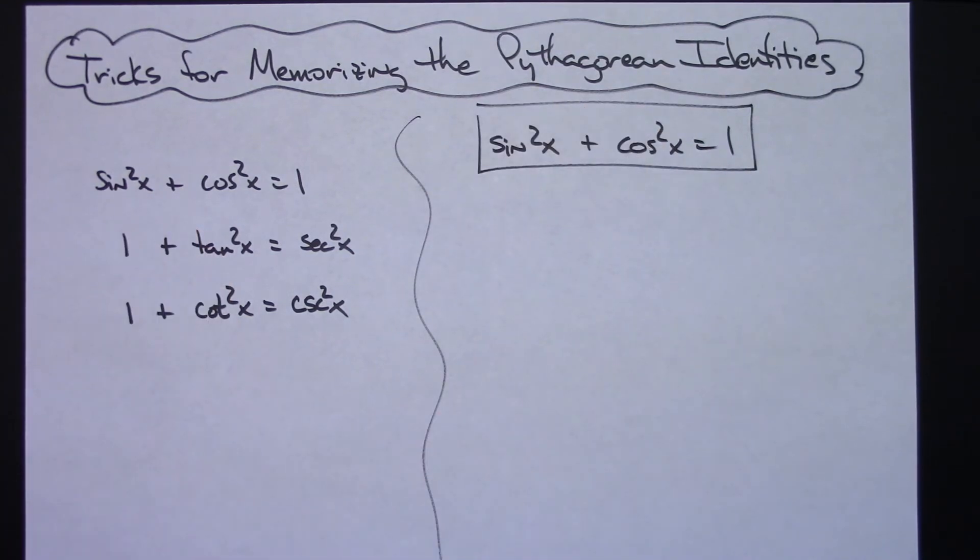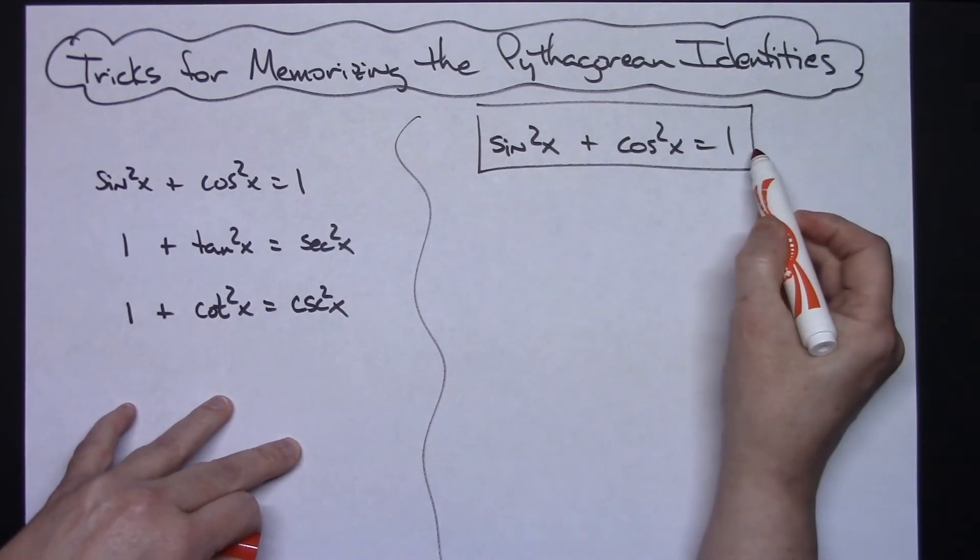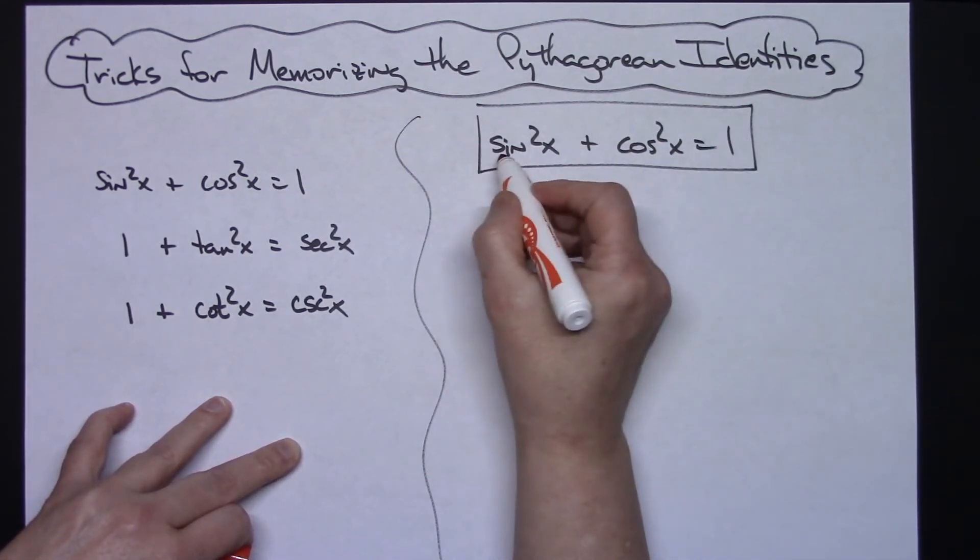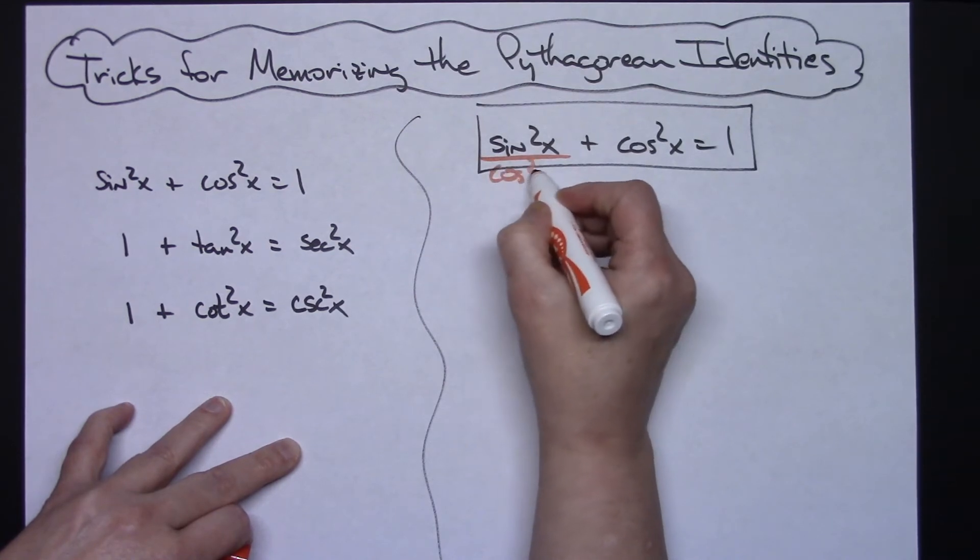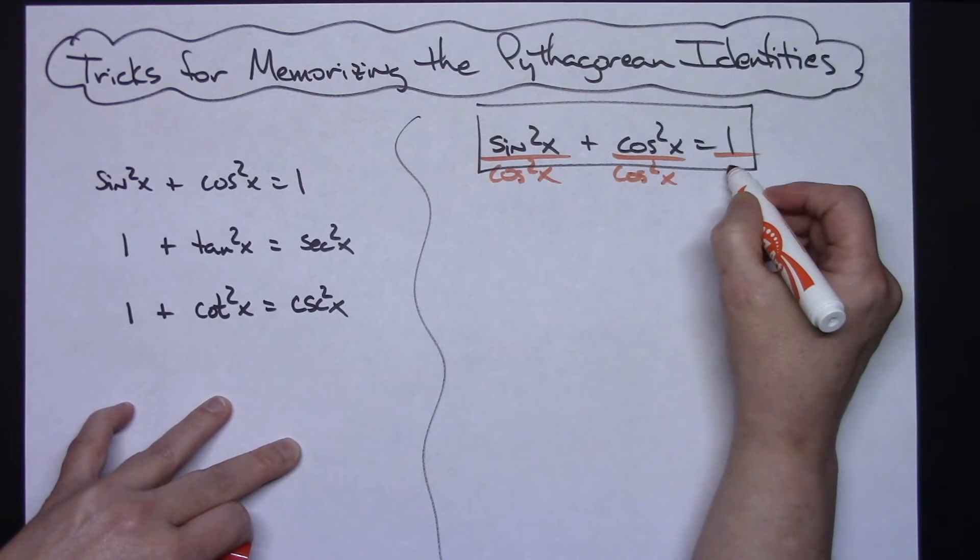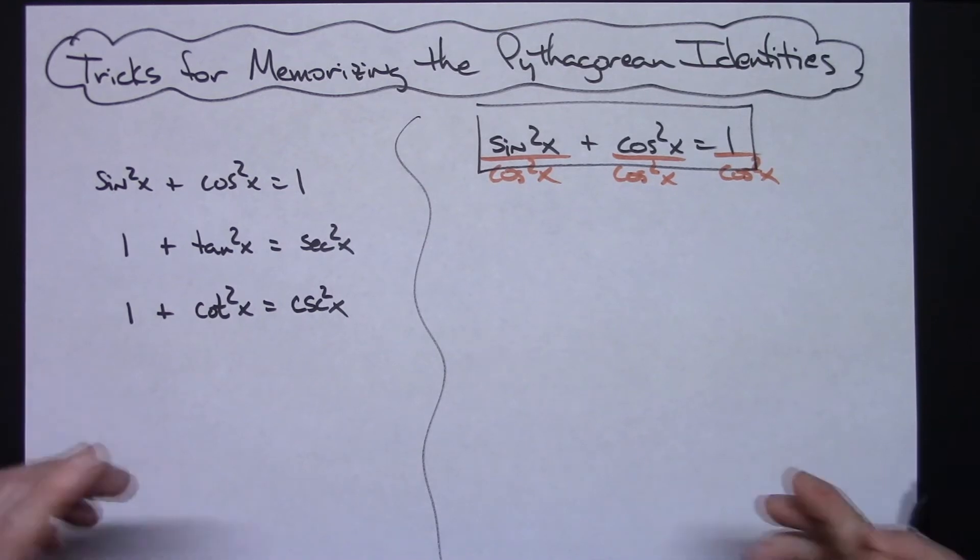All right, now to get the second row here, you go through and you divide everything by cosine squared x. So divide by cosine squared x, divide by cosine squared x, and divide by cosine squared x. All right, now as long as you can simplify these, then you should be good to go.